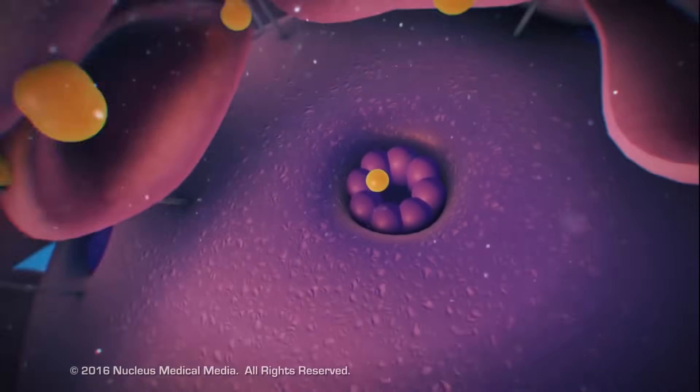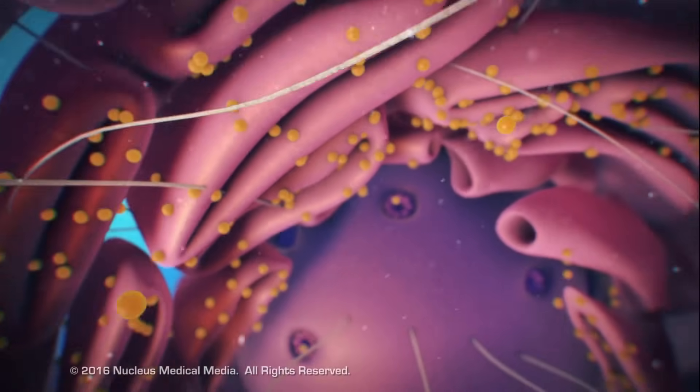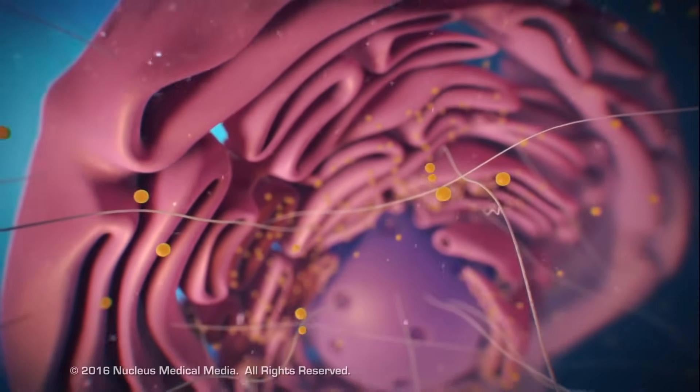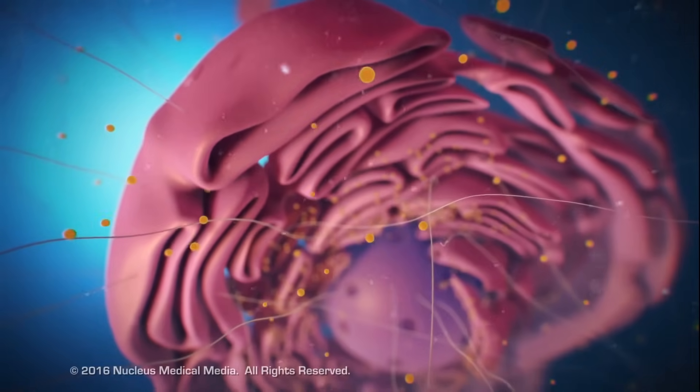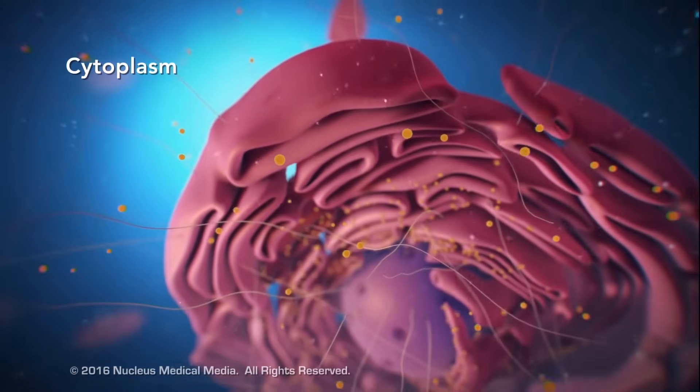After ribosomes leave the nucleus, they will have the important job of synthesizing or making proteins. Outside the nucleus, the ribosomes and the rest of the organelles float around in cytoplasm, which is the jelly-like substance.